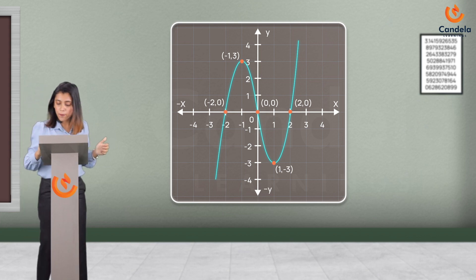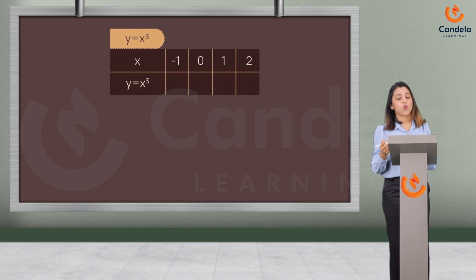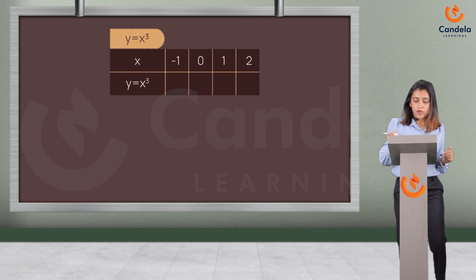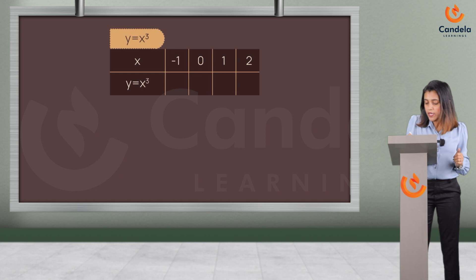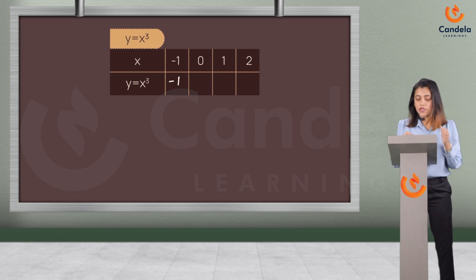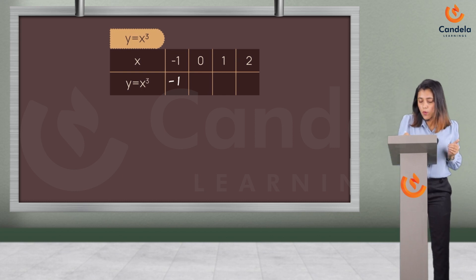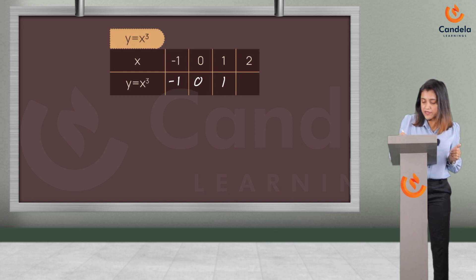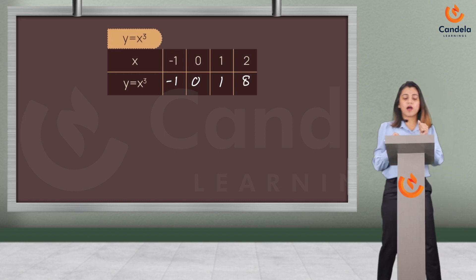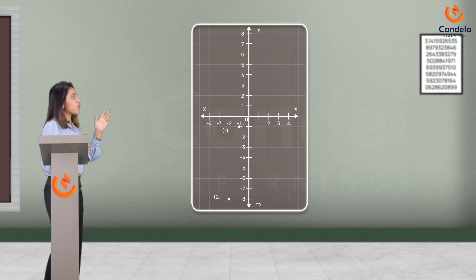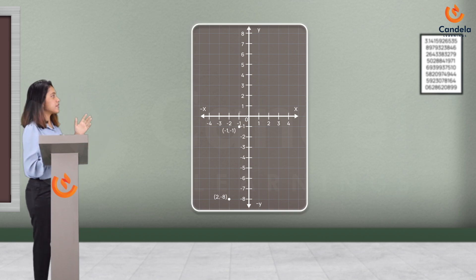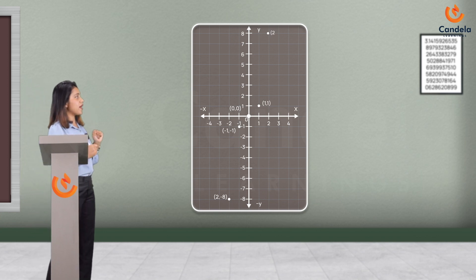Let's check another example: y = x³. If x is minus 1, y becomes minus 1. If x is 0, y is 0. If x is 1, y is 1. If x is 2, then y becomes 2³, which is 8. Let's mark these points: (−1, −1), (0, 0), (1, 1), and (2, 8).